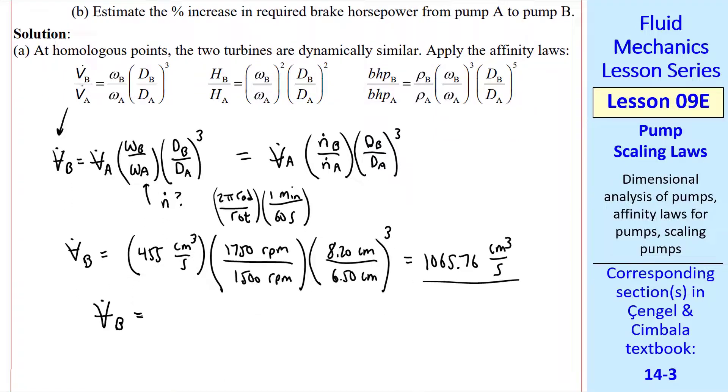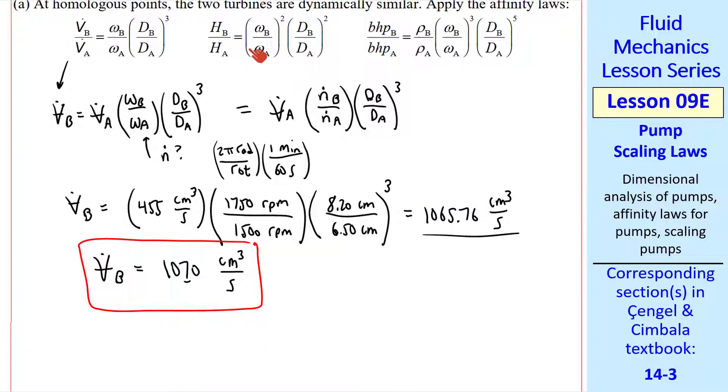So we predict to three digits that V dot B is 1070 cubic centimeters per second. Compared to V dot A, this is more than twice as much volume flow rate, even though the diameter has gone up by only a factor of 26%. That's because of this cubed exponent.